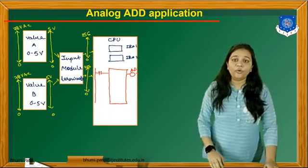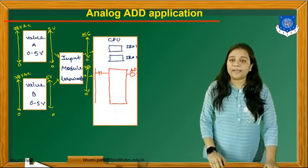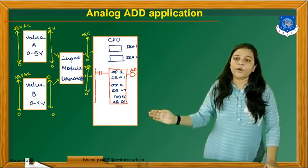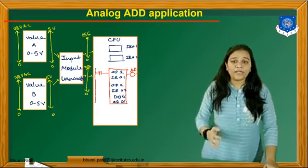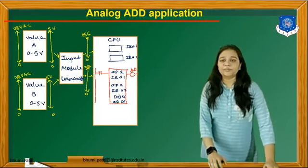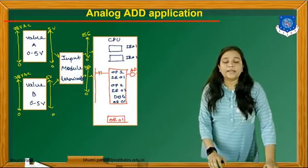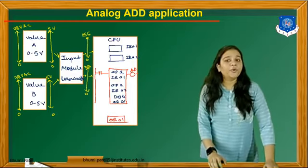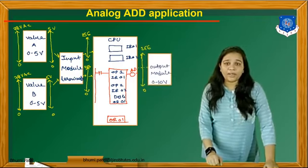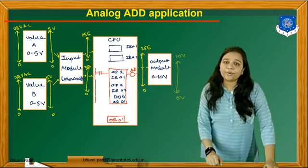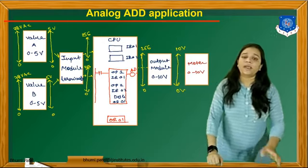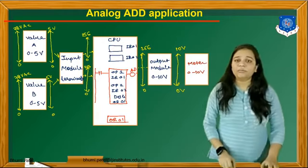Then we add using the ladder diagram. We can add these two values. The block format of the addition takes operand number 1 from value A, operand number 2 from value B, and then the addition instruction is applied. We save the data to the destination address, which is OR01. Again, this bit will be converted by the output module to 0 to 10 volts.